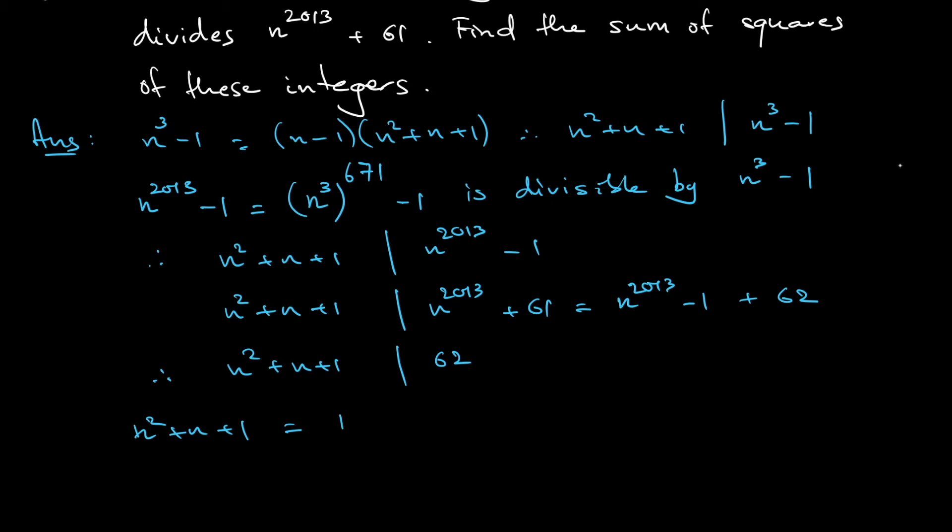Positive factors of 62, you can have 1 which corresponds to 62, 2 corresponds to 31. So, 4 possible positive factors of 62. Quadratic equation, you can solve one by one here. So, if n² + n + 1 equals 1, that means that your n is either 0 or -1. This is just solving quadratic equation, okay? I leave that up to you. n² + n + 1 equals 2.